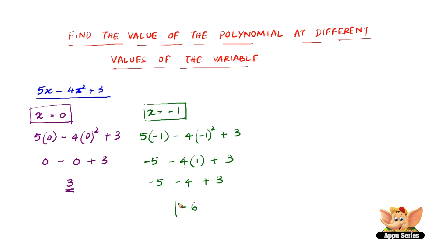Therefore, minus 6 is the value of 5x minus 4x squared plus 3 when x equals minus 1.